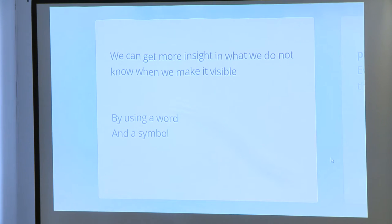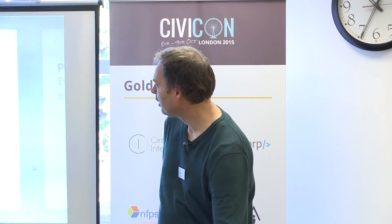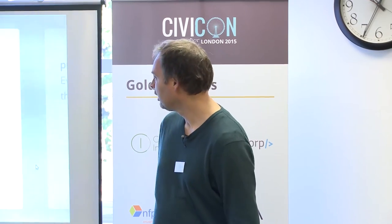The first word will help you get more insight into what we do not know. We can get more insight into what we do not know when we make it visible. We don't have proper words for what we do not know — we have the word 'unknown,' but that's a negative word, it means 'not knowing.' If you make it a positive word, your mind sees it as something you can actually explore. We're going to use a word and a symbol for it, because in some cases you want a word and in others a symbol is nicer.